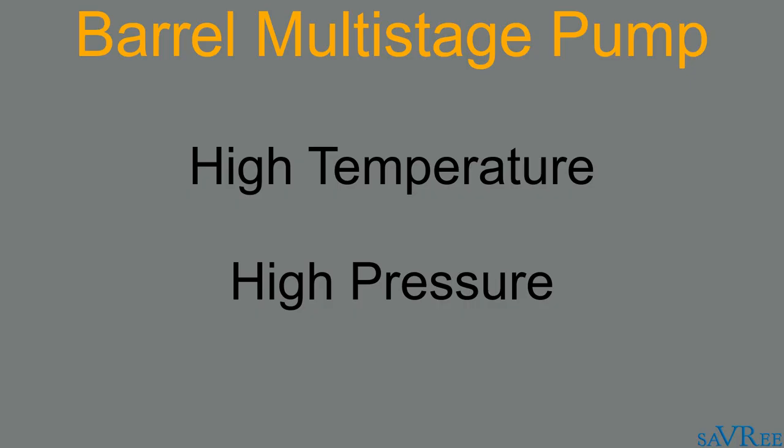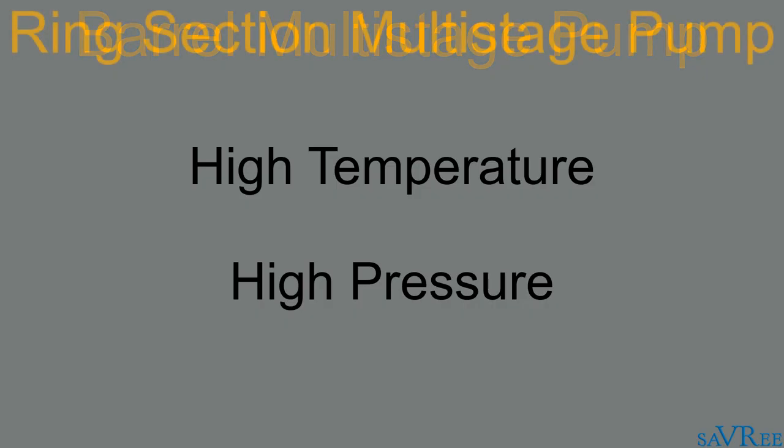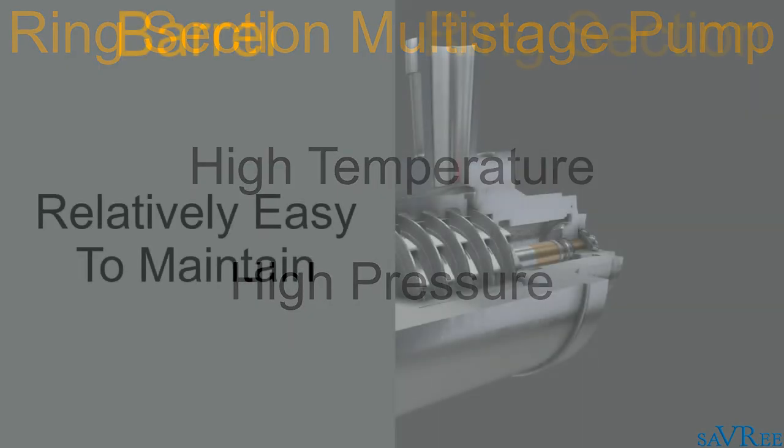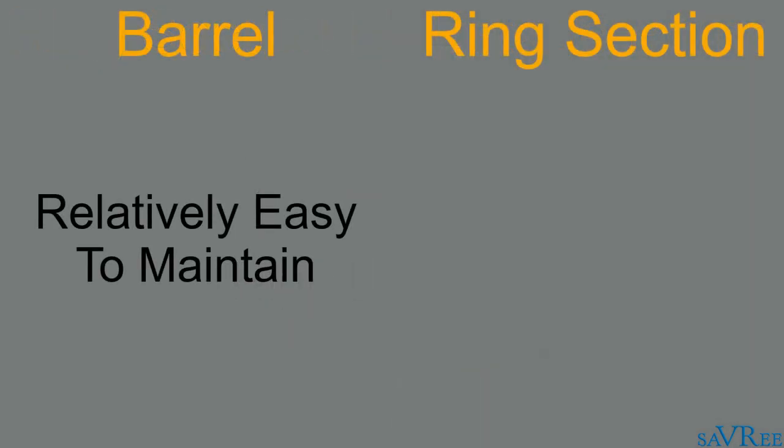Ring section multistage pumps are also used for high temperature and high pressure applications, although there are some differences between the two designs. The barrel type pump allows for the internals of the pump to be removed without disconnecting the outer casing and much of the associated piping.